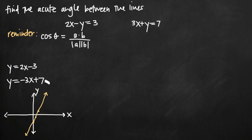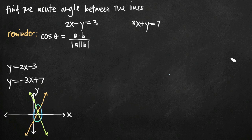For our second line, y equals negative 3x plus 7, we have a y-intercept of positive 7, so the point (0, 7). Our slope is negative 3, meaning we go down 3 and over to the right 1. Drawing this line shows us we're looking for the acute angle between the two lines — the angle less than 90 degrees. The other angle, the obtuse angle, is the wider one larger than 90 degrees.